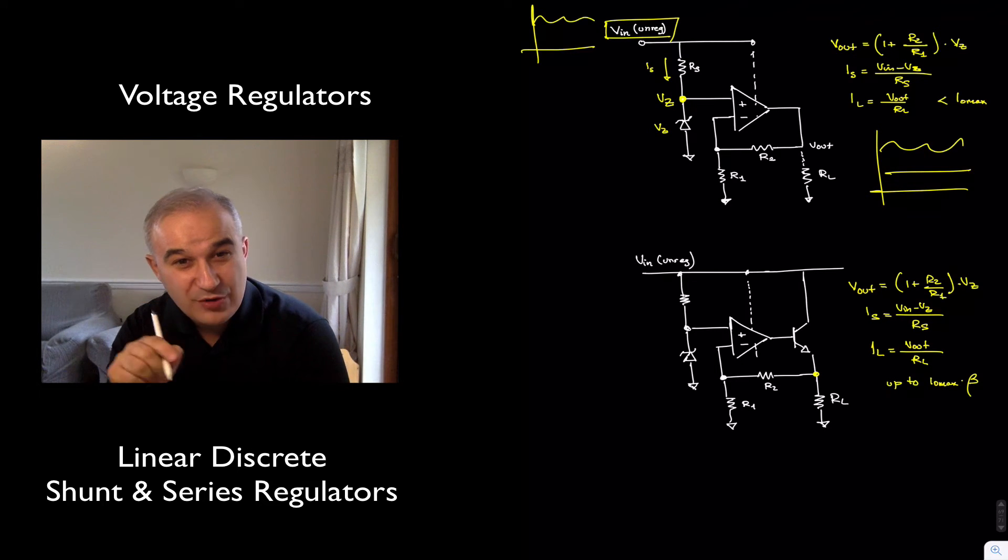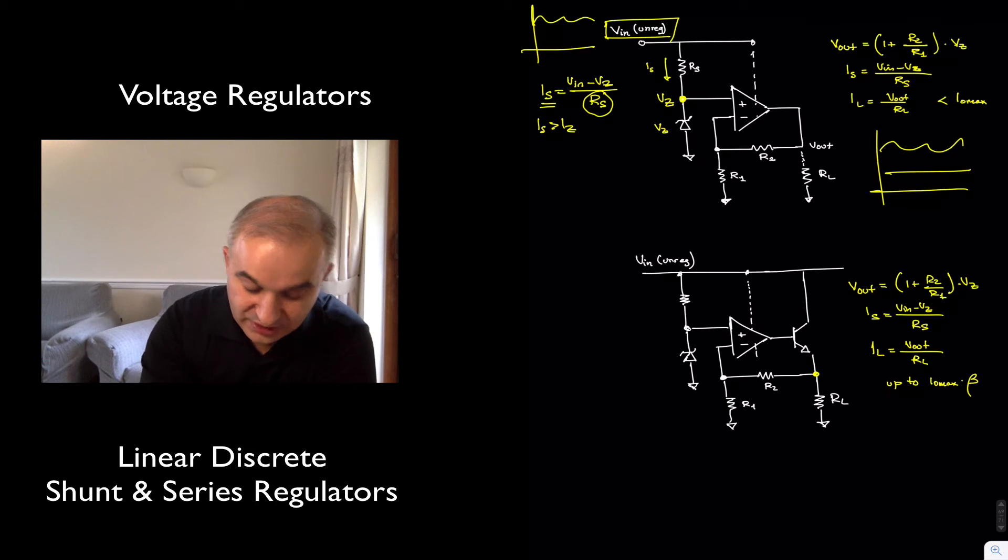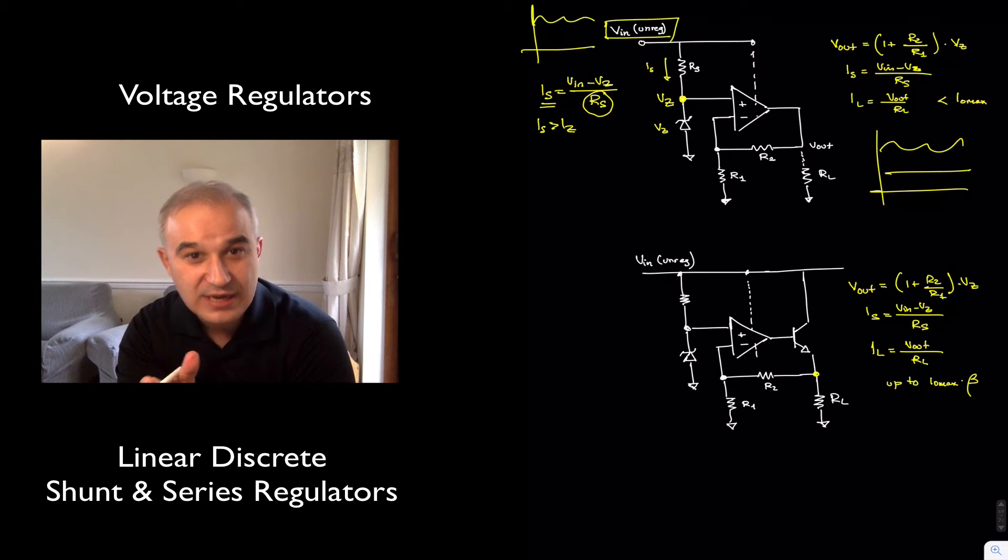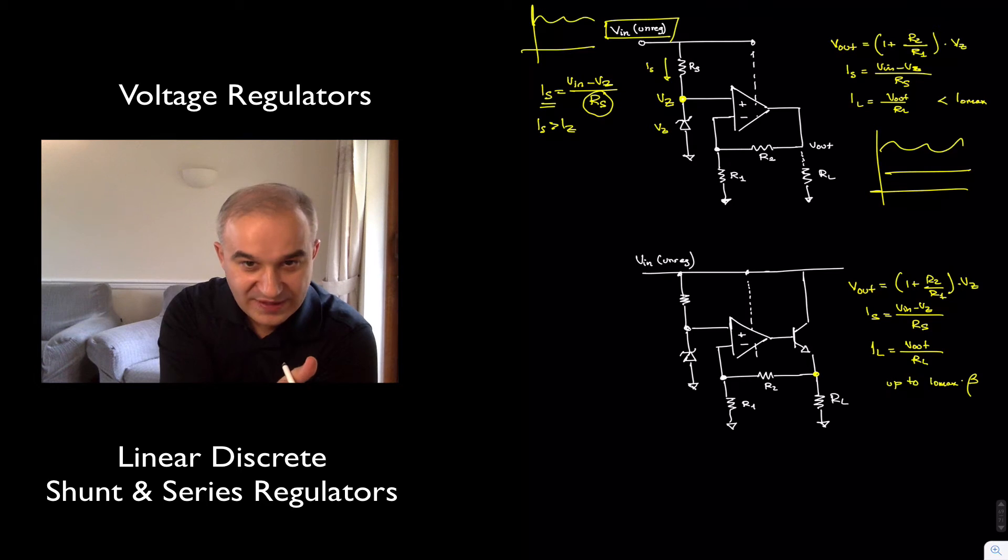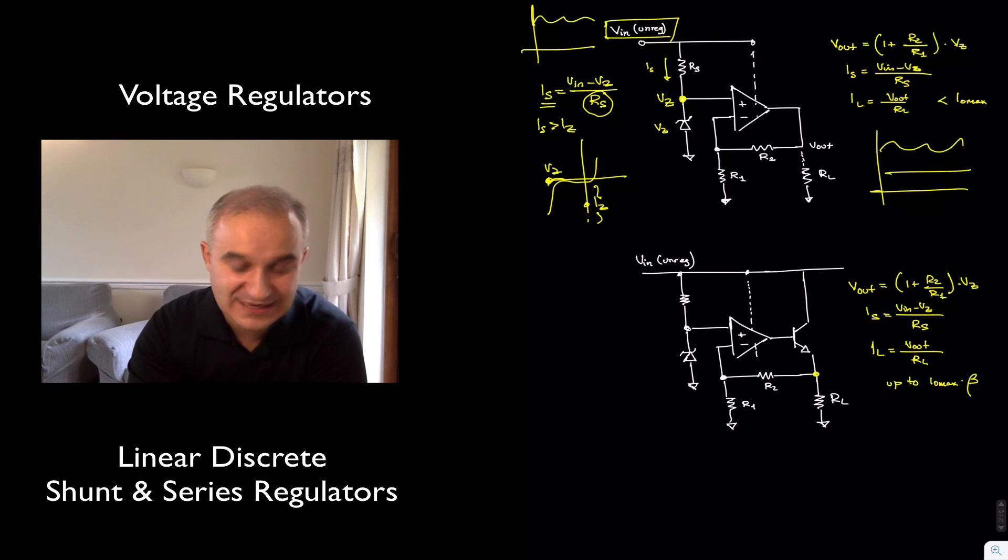Notice that because this is a series regulator, we are going to be able to use a value of RS that is smaller than in the shunt regulators, meaning IS is V input minus the Zener voltage over RS. And so we design RS to make sure that IS is greater than the Zener current that we need in order to make sure that we bias the Zener in the reverse breakdown region, so that changes in the current will result in a steady Zener voltage.